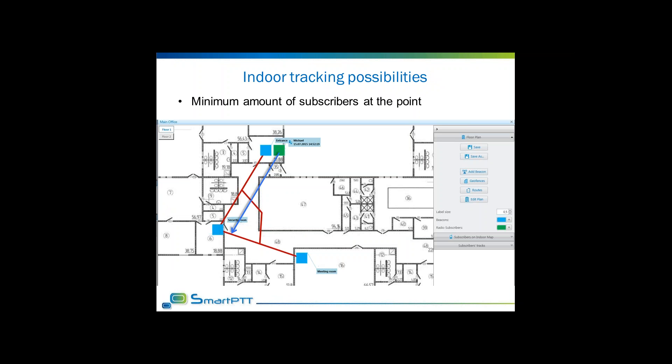We have a new feature related to indoor tracking, but it's also applicable to GPS tracking. You can create a geofence and then require a minimum number of subscribers within that geofence. So if you want to have a guard shack and always require that at least one subscriber be in it at all times, if we see the geofence has zero subscribers, we can create an alert to notify the dispatcher that no one is in the guard shack.